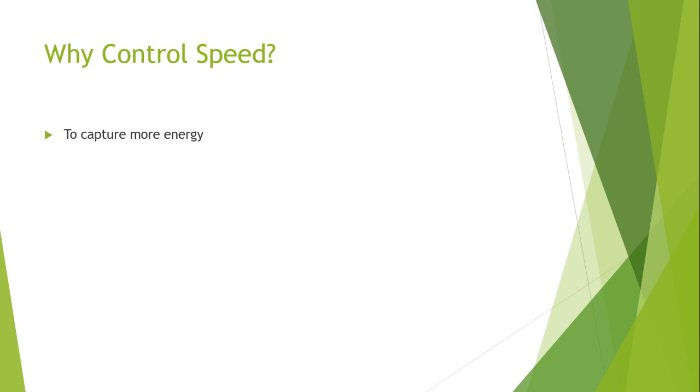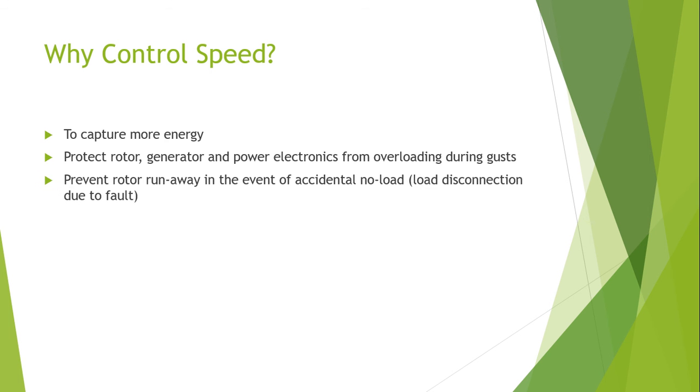Why should we consider controlling the speed? Speed is controlled to ensure that more energy is captured, and the rotor, generator, and power electronics connected with the wind turbine's power system are protected and ensured safe. The third reason is the prevention of rotor runaway in the event of accidental no-load when the load is disconnected due to fault conditions.